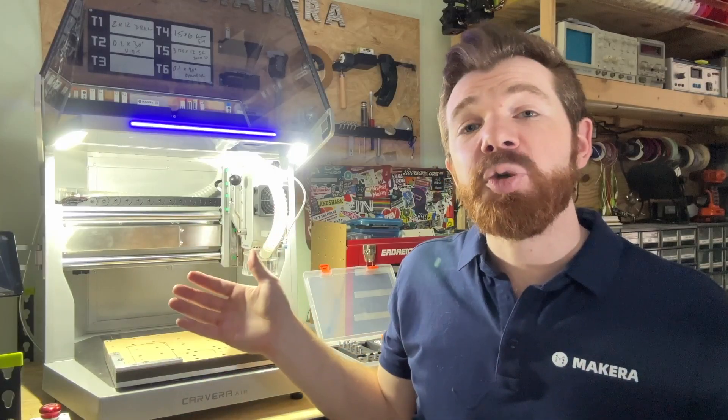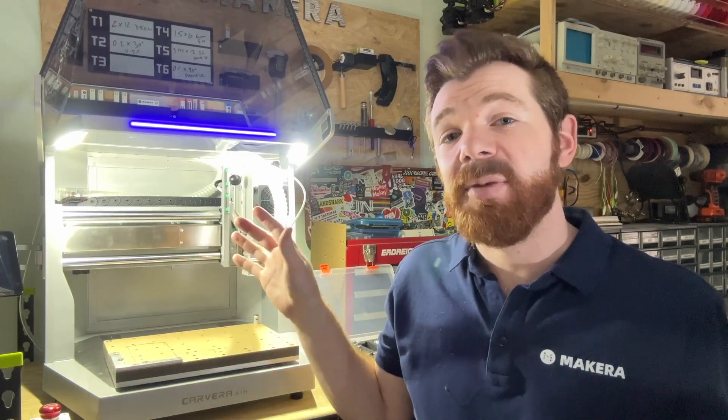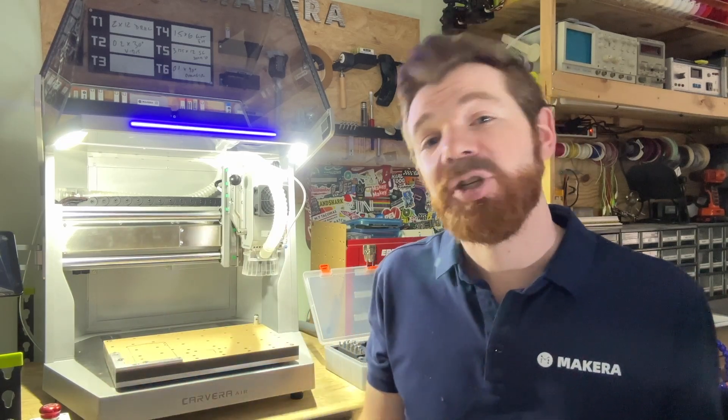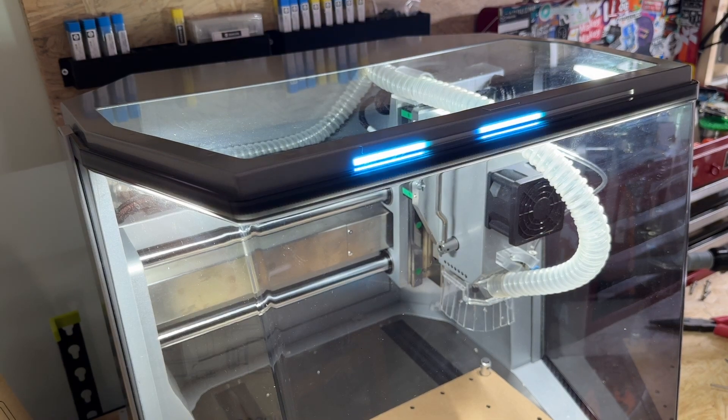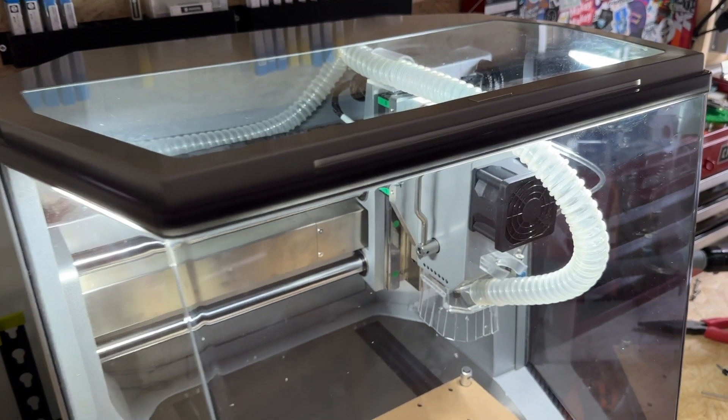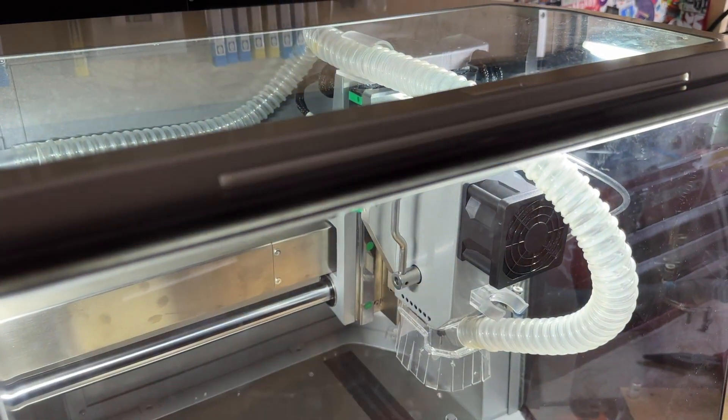When it's time for a tool change mid-job, the Carvera Air will automatically pause and prompt you that it's time to change your bit. This is done in the controller app and by sounding a beep at the machine, and adjusting the LED light bar in the machine to tell you which tool is needed as well.